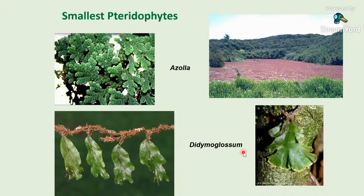Here is Didymoglossum, which is also small but epiphytic, belonging to Hymenophyllaceae. It is an epiphytic fern, and Strasburger in his book has quoted this plant as the smallest pteridophyte.